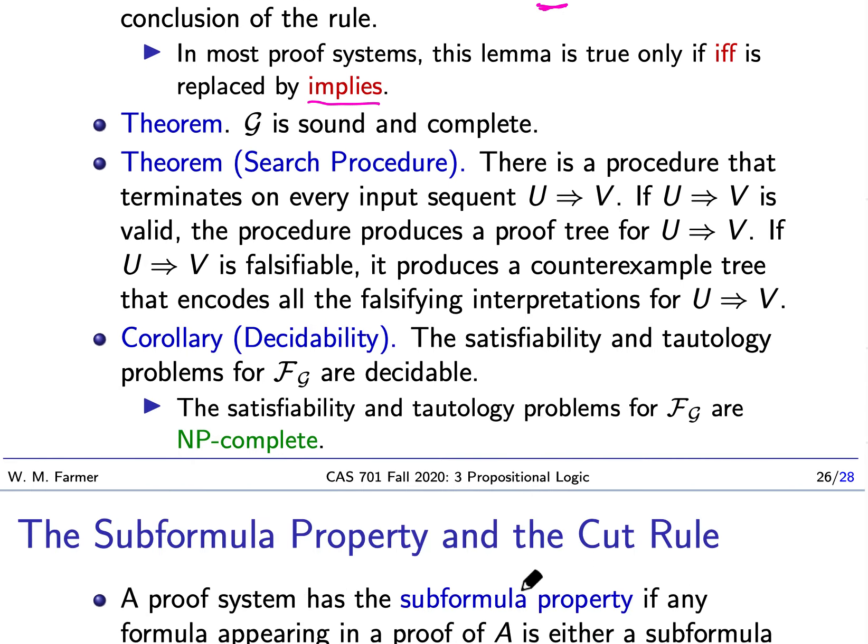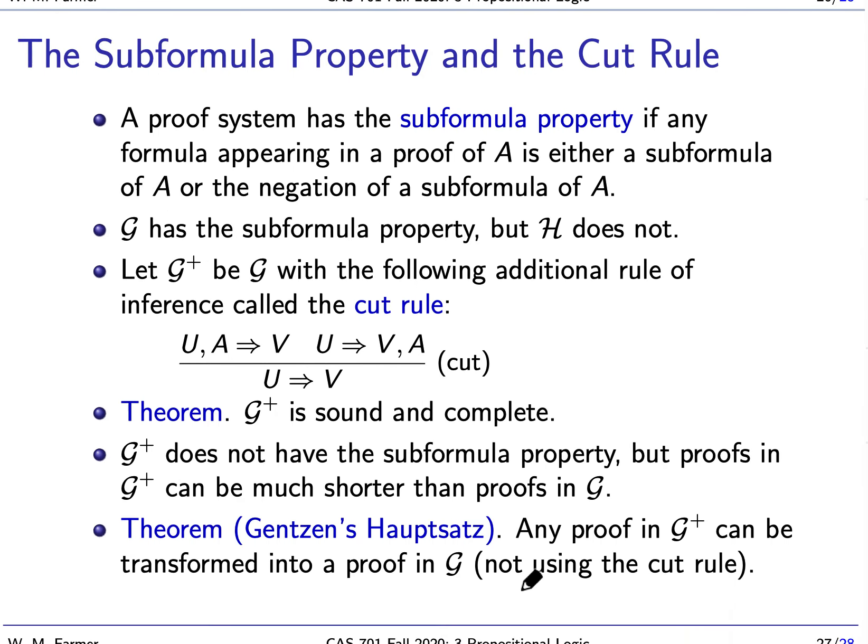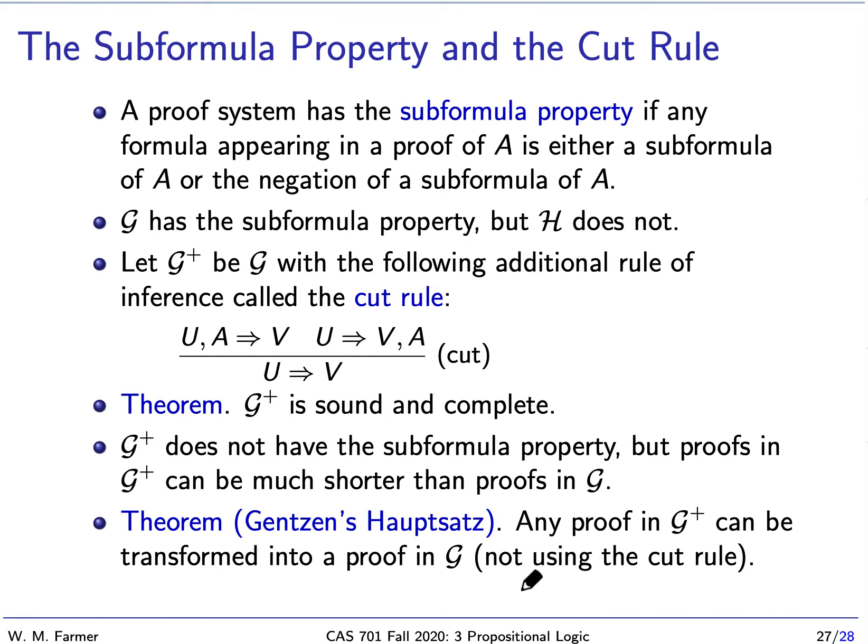One last thing I'd like to discuss is the subformula property and a cut rule. A proof system has a subformula property if every formula appearing in the proof of A is a subformula or the negation of a subformula of A. This is a very strong property, and G has this property, but H does not.